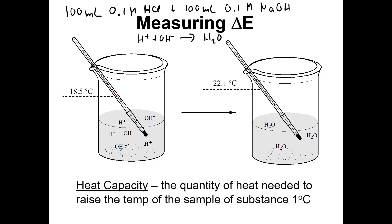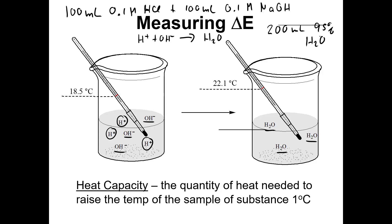Three hydrogen ions react with three hydroxide ions to form three water molecules. We're talking about 200 milliliters of solution, of which 95% is water. So the system really is the chemical reaction, and the surroundings is the water. If we can simply measure the heat that's evolved and relate that to the energy taken up by the surroundings, we can relate that to the energy given off by the chemical reaction — because we know the specific heat of water.